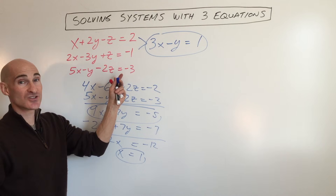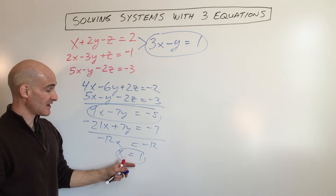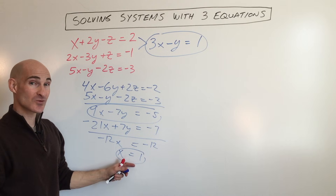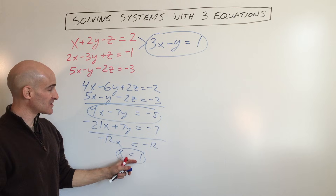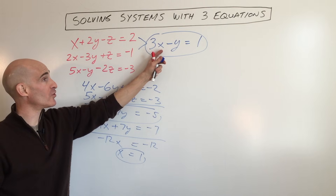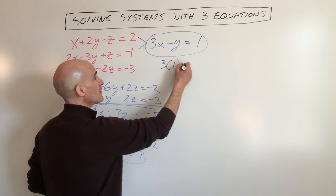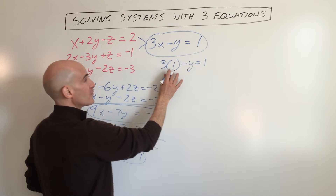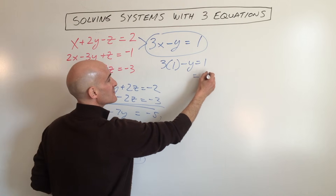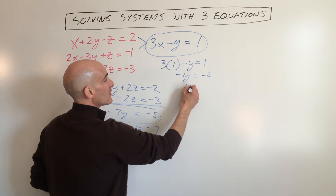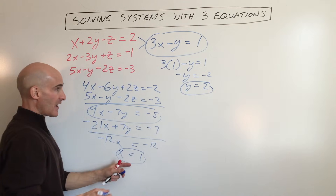So we went from three equations with three variables, down to two equations with two variables, down to one equation with one variable. Now we're going to work our way backwards. We're going to put x equals 1 into one of the equations that has just two variables. So 3 times 1 minus y equals 1. We subtract 3 from both sides, that gives you negative 2. Divide by negative 1: y equals 2.